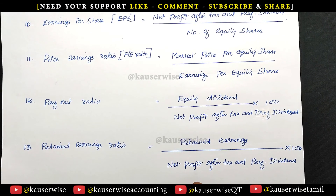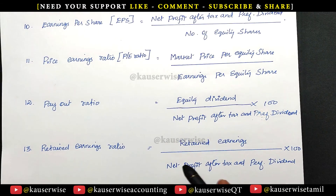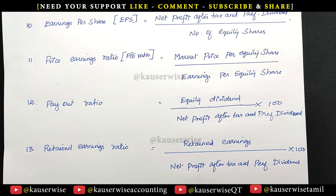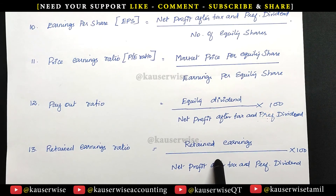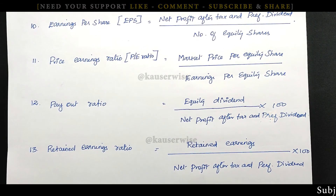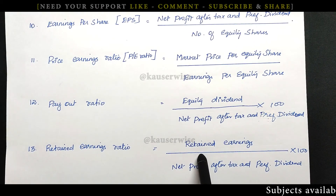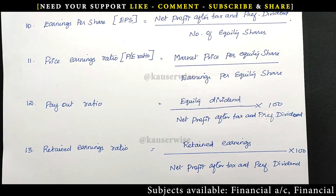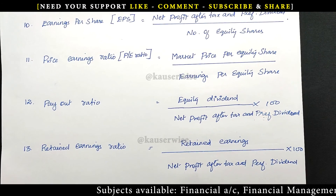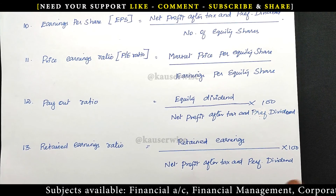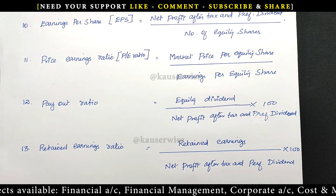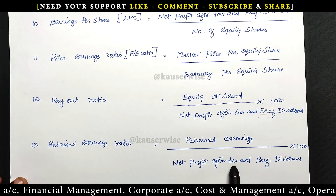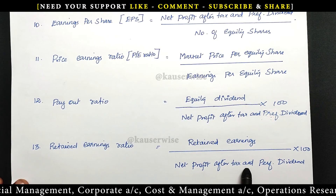Already in the balance sheet there are accumulated retained earnings. But here we calculate current year retained earnings: take current year net profit after tax, subtract preferential dividend and any equity dividend. In our problem we have preferential share capital of 5 lakhs, so 10% on 5 lakhs gives 50,000 preferential dividend. Subtract that, and also subtract equity dividend of 2,20,000. The net profit after tax and preferential dividend of 4,70,000 is used as the denominator.